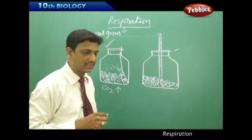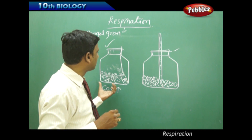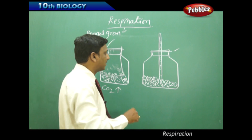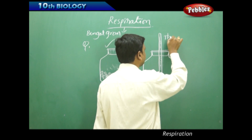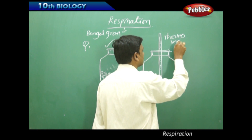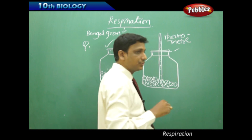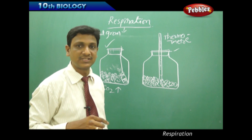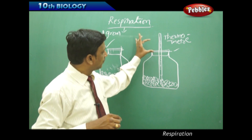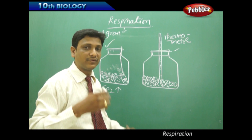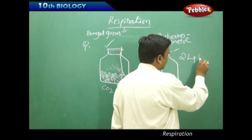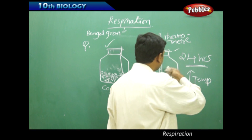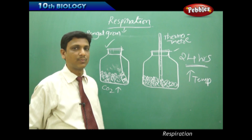Now the second activity: we use the same type of bottle with sprouted seeds, but this time we insert a thermometer. The thermometer is used to measure temperature. First note the initial temperature inside the bottle, then put the seeds in, close the bottle with the cork, and observe the rise in temperature over 24 hours.